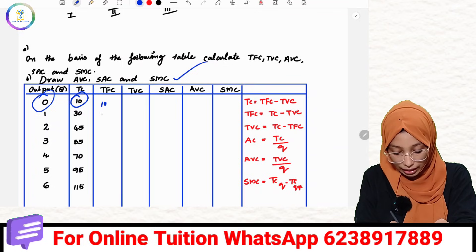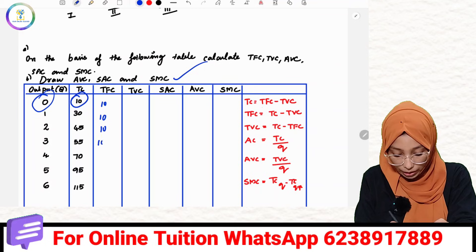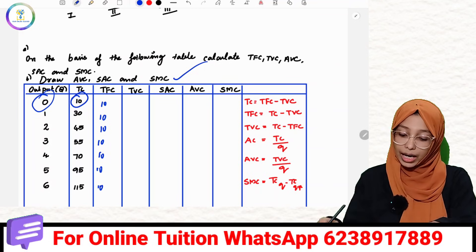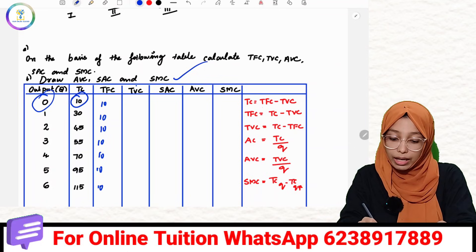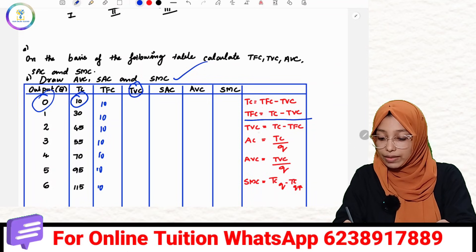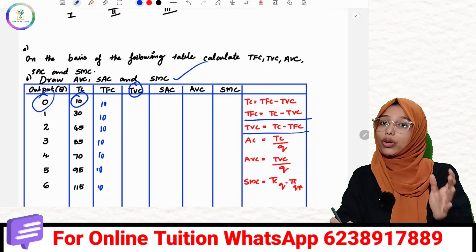TFC is equal to 10. The next one is TVC. I have an equation here: TVC is equal to TLC minus TFC.